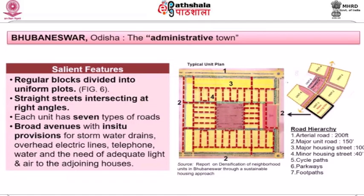Within each of the six units there were regular blocks divided into uniform plots, with straight streets intersecting at right angles. Each unit had seven types of roads, and there were broad avenues with in-situ provisions for stormwater drains, overhead electric lines, telephone lines, water supply network, and adequate light and air to adjoining houses.